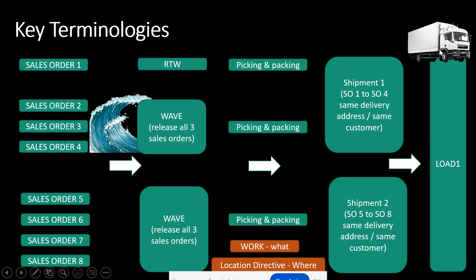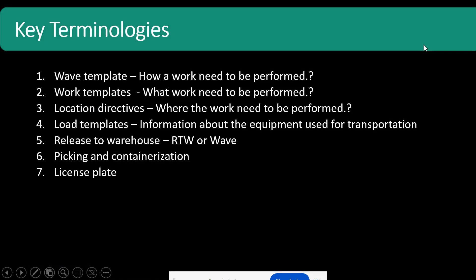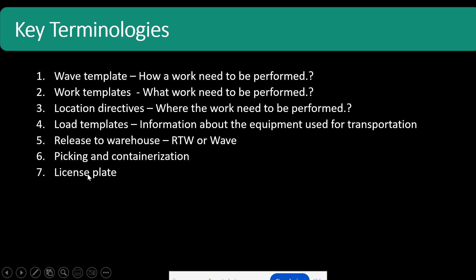A load is the mode of transport; the load template defines its capacity. We also covered the waving concept — releasing to wave — and picking and containerization. Containerization primarily means packing finished goods products. License plating is palletization where you group items and process the entire batch together, because it doesn't make sense to scan each and every item in a pallet when moving it across locations. These are some of the important key terminologies, and there are further terminologies we may need to cover in upcoming sessions.